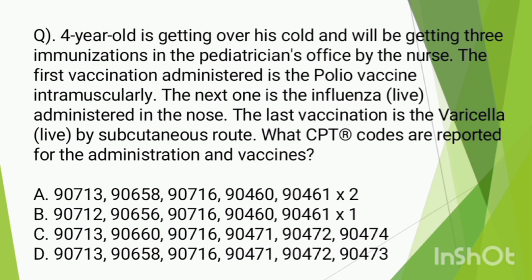Question number 6. A 4-year-old is getting over his cold and will be getting 3 immunizations in the pediatrician's office. The first vaccination administered is the polio vaccine intramuscularly. The next one is the influenza live, administered in the nose. The last vaccination is the varicella live by subcutaneous route. What CPT codes are reported for the administration and vaccines?